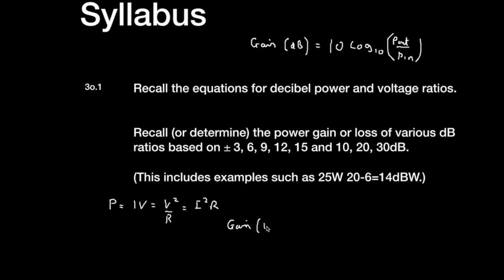So that changes the equation then to gain voltage in dB is equal to 20 log base 10 V out over V in, and I think you can find this on your formula sheet in the examination.